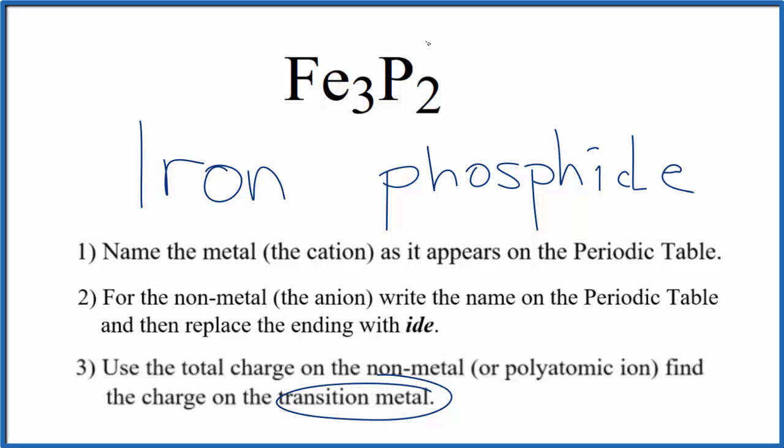We know that phosphorus will be three minus each one. So two times three minus, that gives us a charge of six minus. So we need to have six plus here, so the charges add up to zero. We have a net charge of zero.